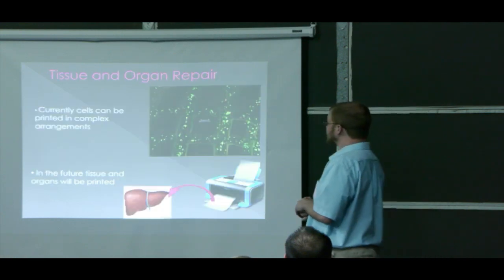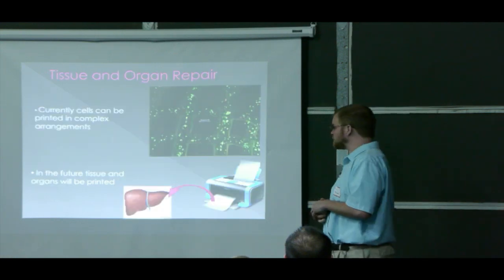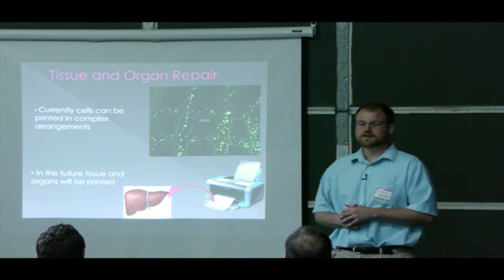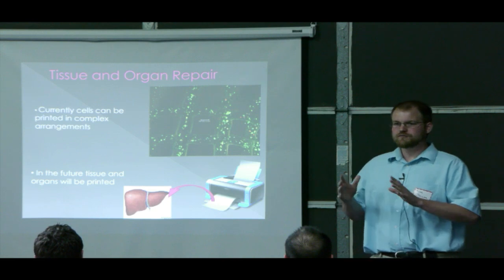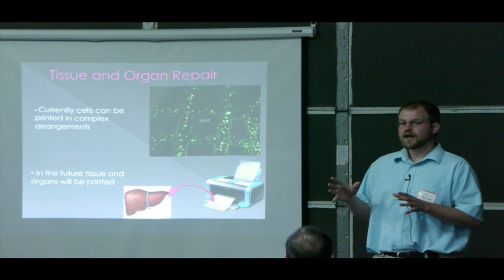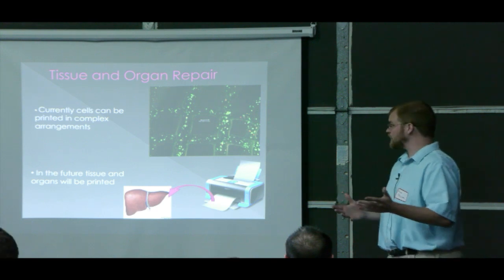Moving on, we can also print cells into matrices. In the future, we can now print tissues, and we fully expect to be able to print organs in the near future. So imagine your liver fails. You'll be able to go to the hospital, they'll print you a new liver, and implant it into you. That's pretty awesome too.